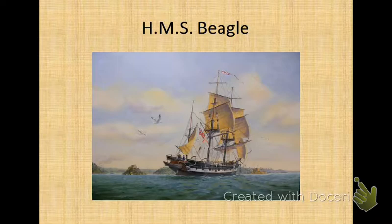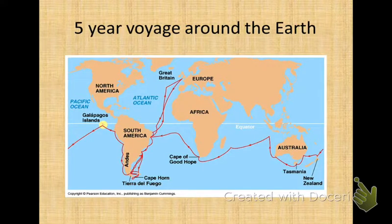They were planning a very long voyage around the world with the primary purpose of charting poorly known stretches of the South American coastline. This journey took five years, and he returned in 1836. While there, he collected plants, animals, and fossils on every stop of the journey and sent them back to England. He took two books with him — both mentioned in the previous PowerPoint — by two individuals whose opinions and studies helped him develop his theory of natural selection.